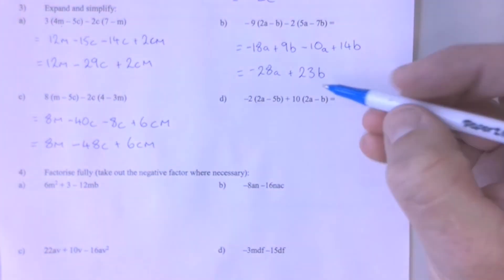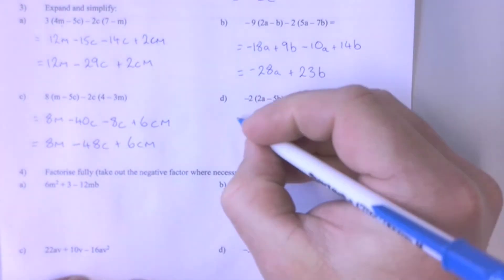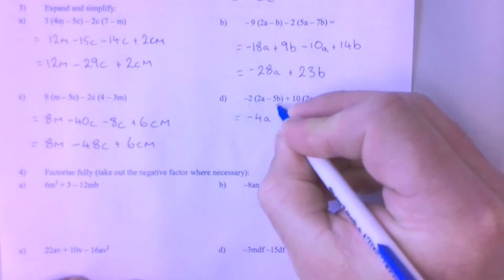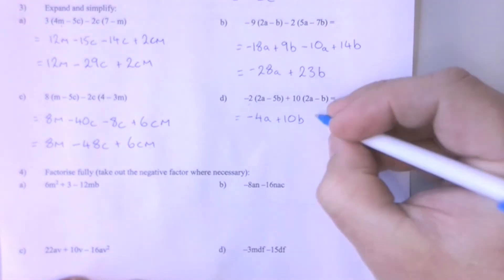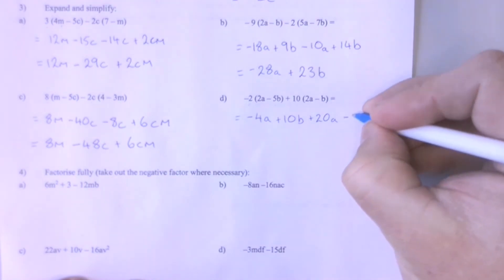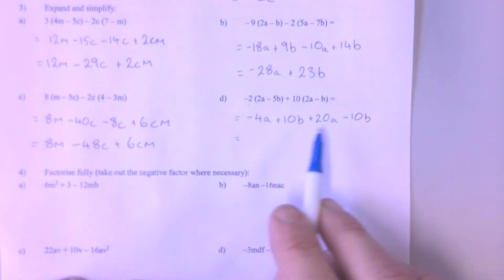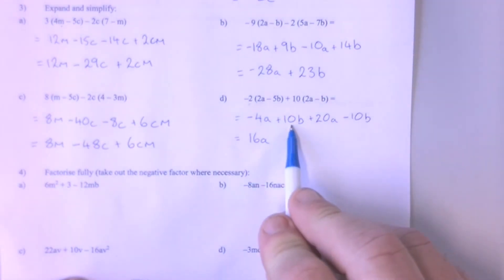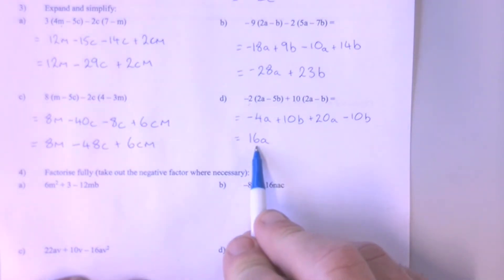Question 3D. I'm going to expand our brackets and collect our like terms and simplify. I have minus 2 times 2A leaving me minus 4 groups of A. Minus 2 times minus 5B giving me positive 10 groups of B. 10 times 2A giving me 20 groups of A. And 10 times negative 1B giving me negative 10 groups of B. Collecting like terms: I have negative 4As and I add 20 groups of A giving me 16 groups of A. And I have 10 groups of B — I take those 10 groups of B away — so they are not there at all anymore. The answer is 16A.